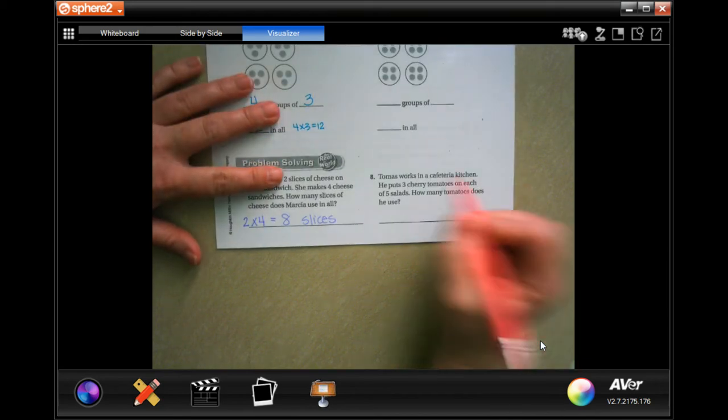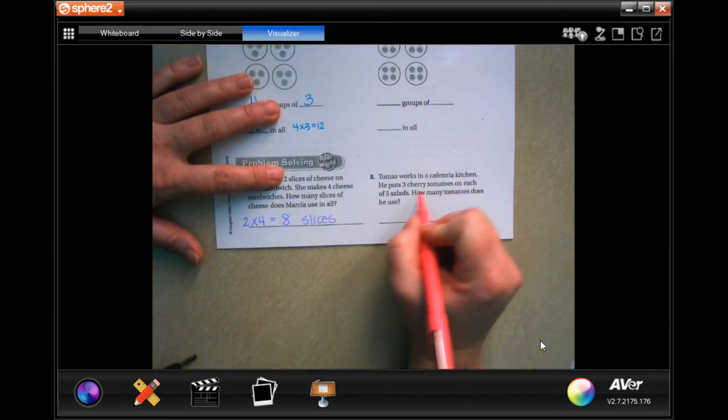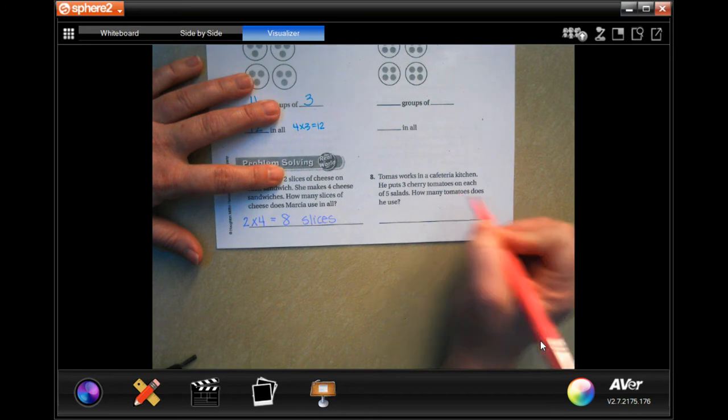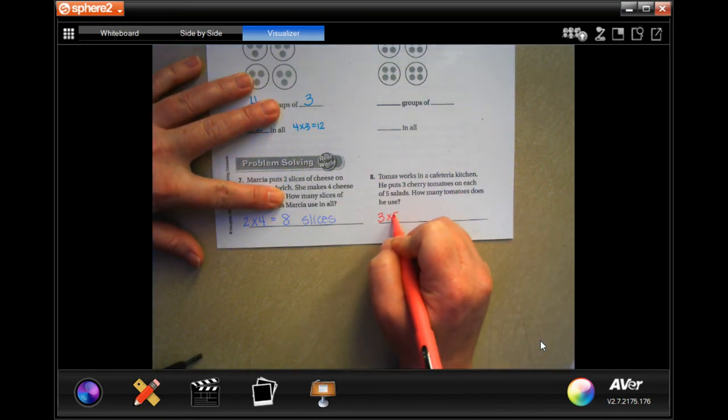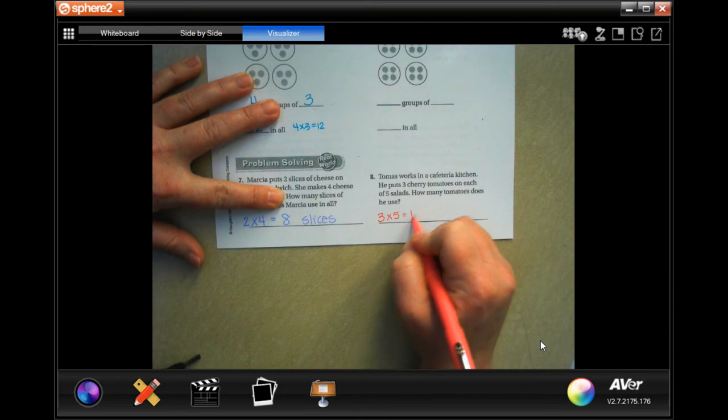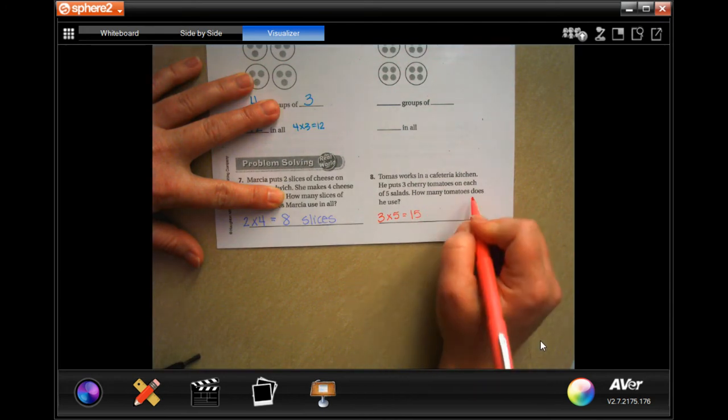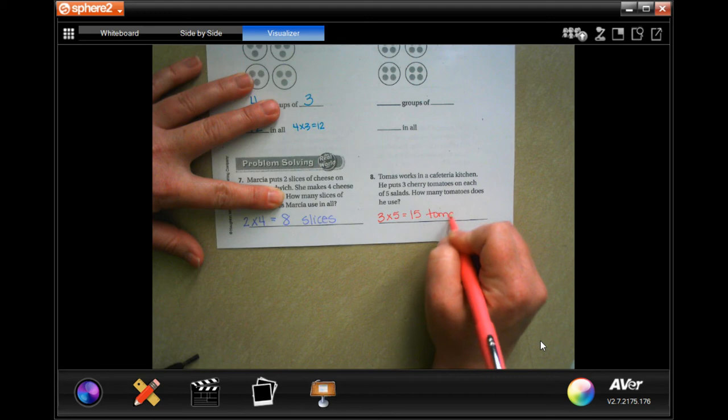Okay, Thomas works in a cafeteria kitchen. He puts three cherry tomatoes on each of five salads. So three cherry tomatoes on each of five salads. Three times five is 15. How many tomatoes does he use? So 15 tomatoes.